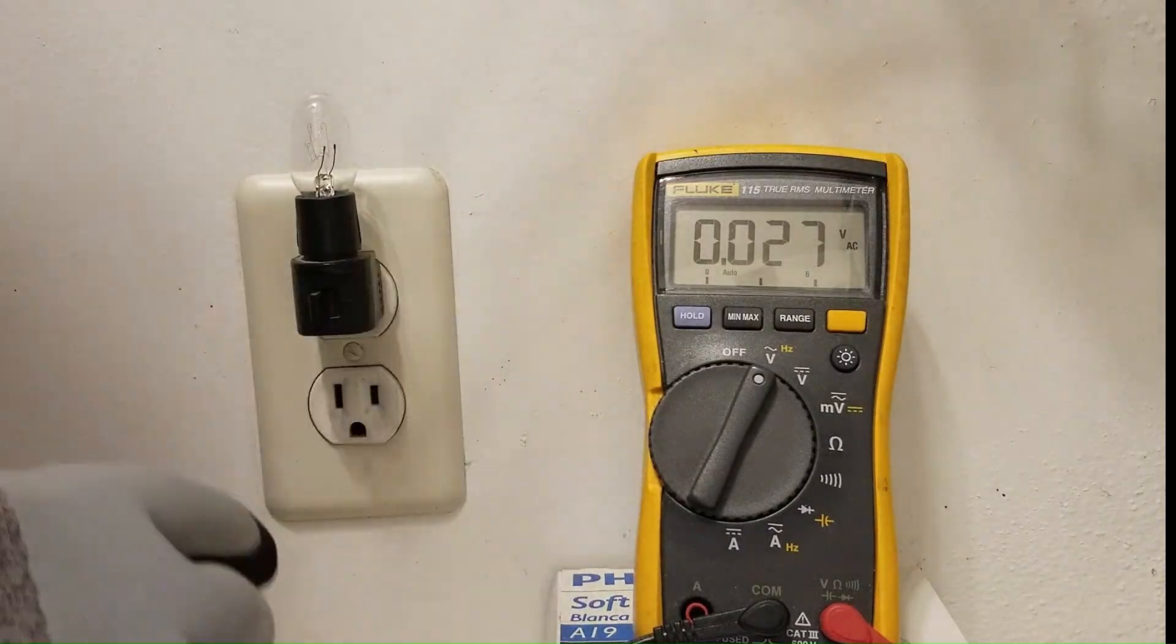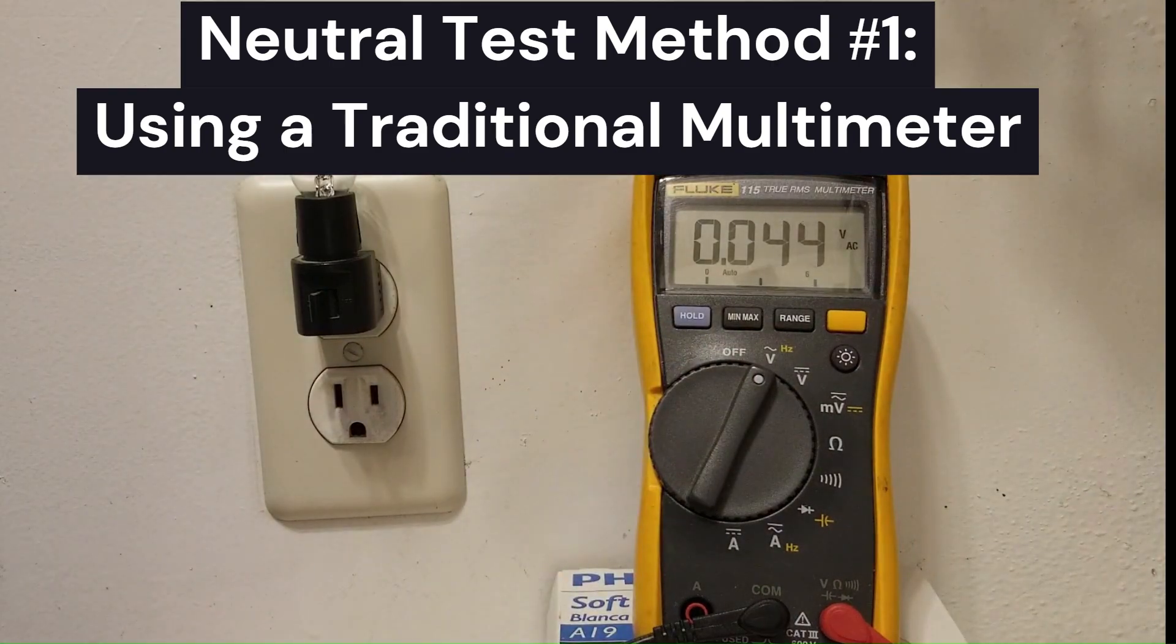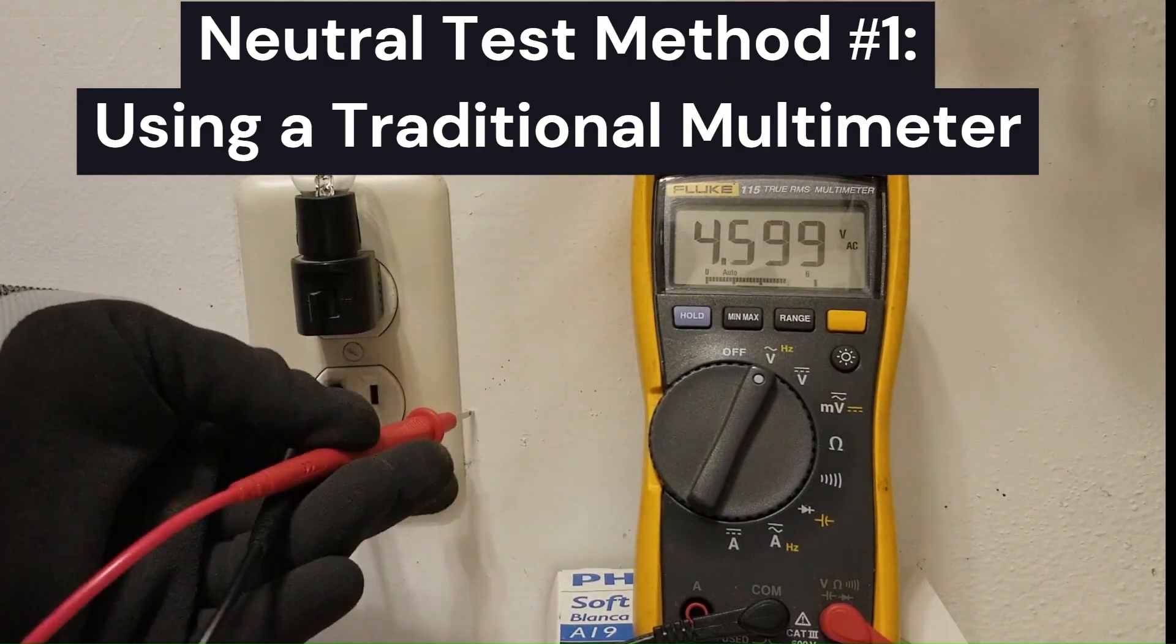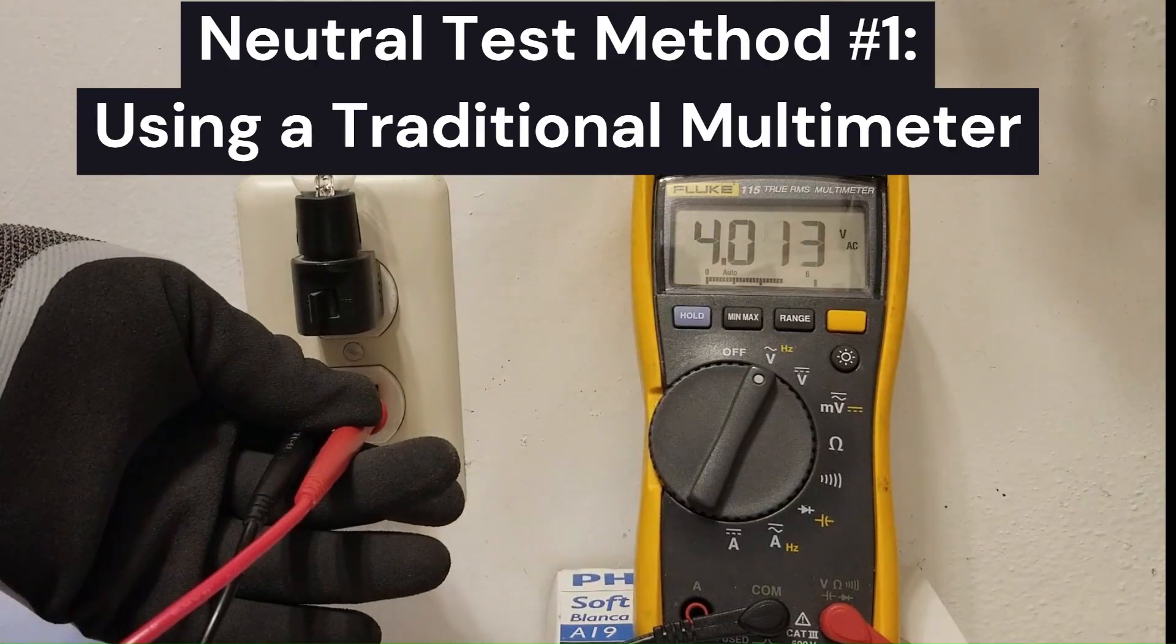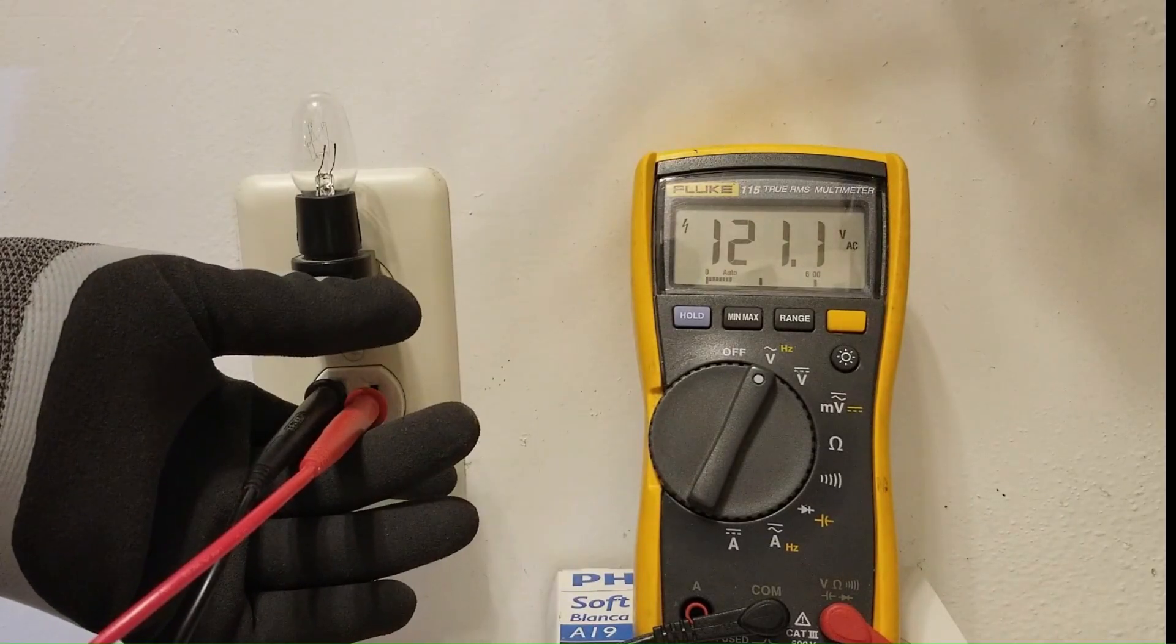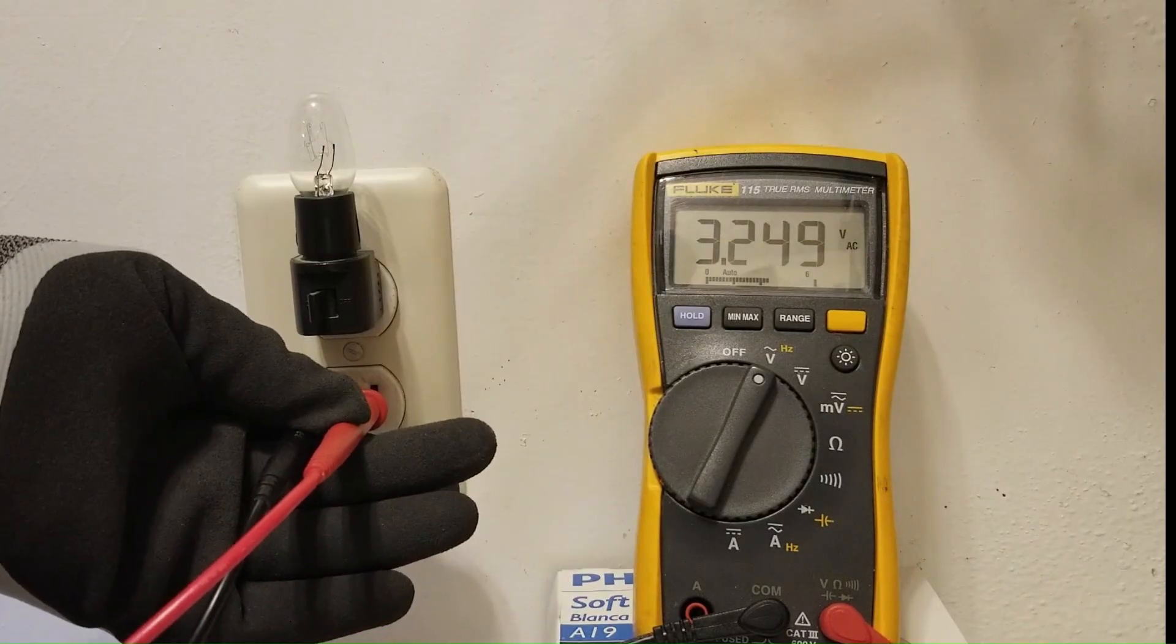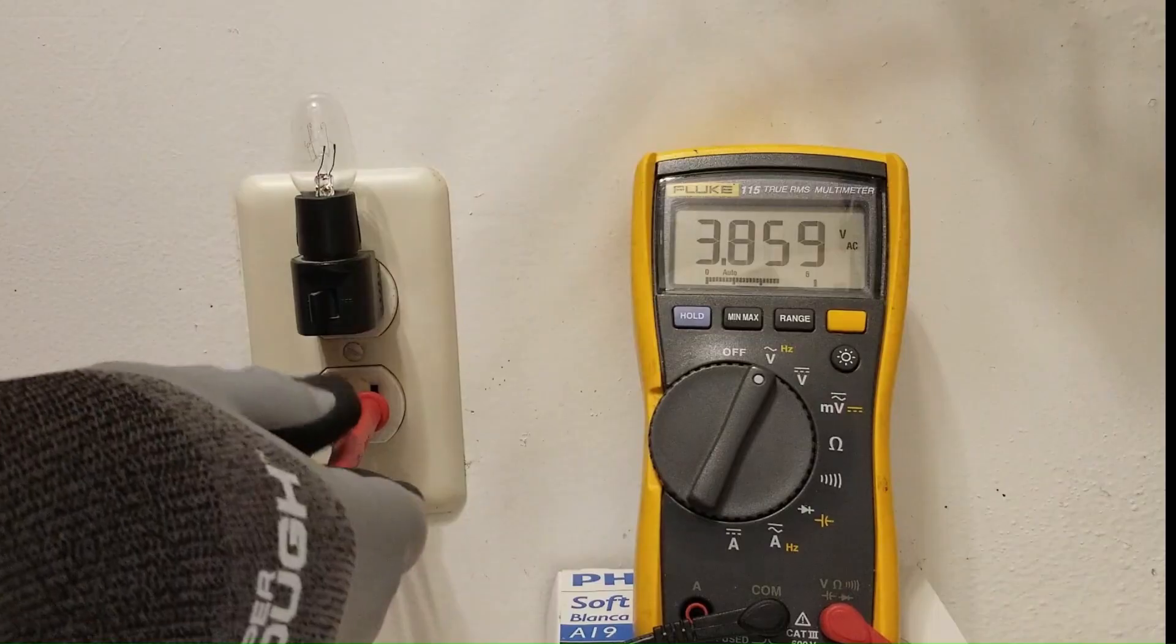So I want to show you how you can test for a bad neutral by having a load in the socket. And as you noticed, the voltage dropped down to around four volts when I turned this light on. I turned the light off, it goes back up to 121 volts. I turn it back on and it drops down to just around four volts.